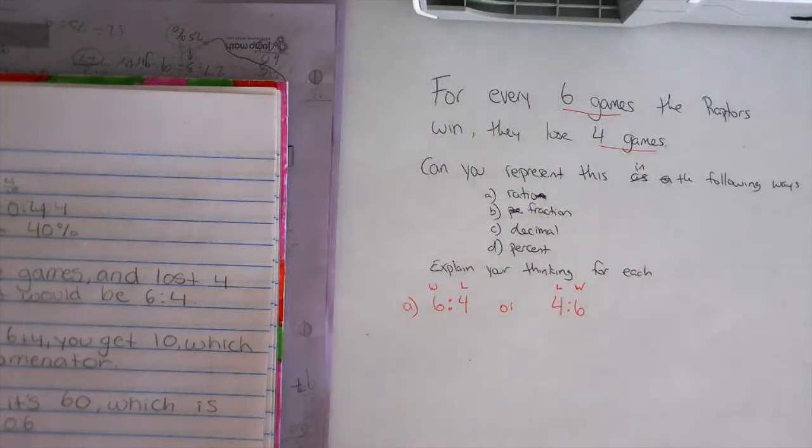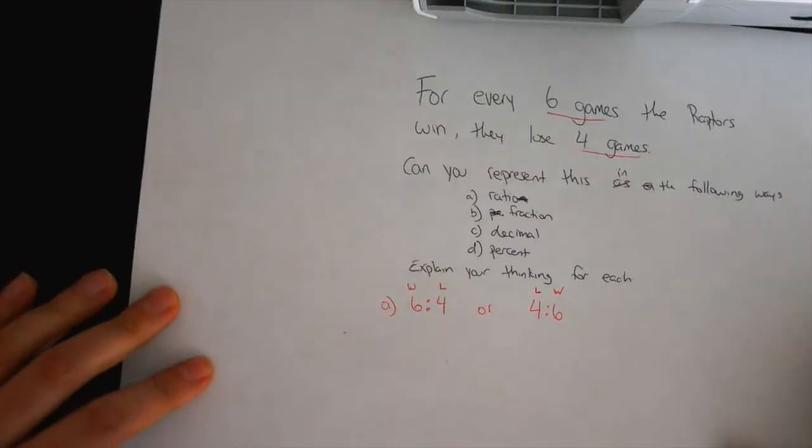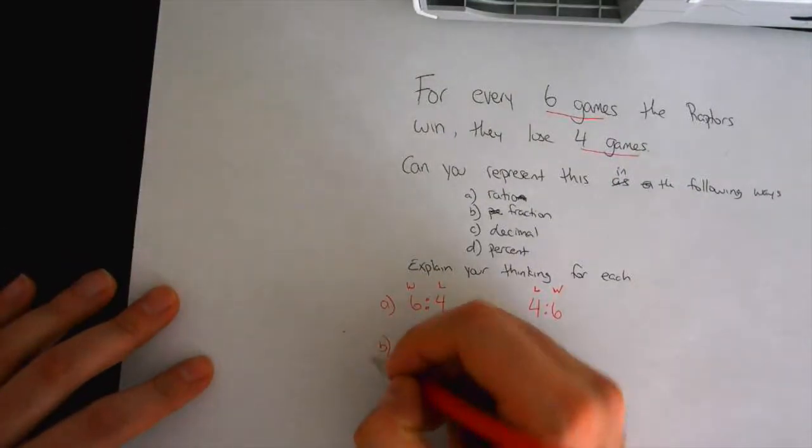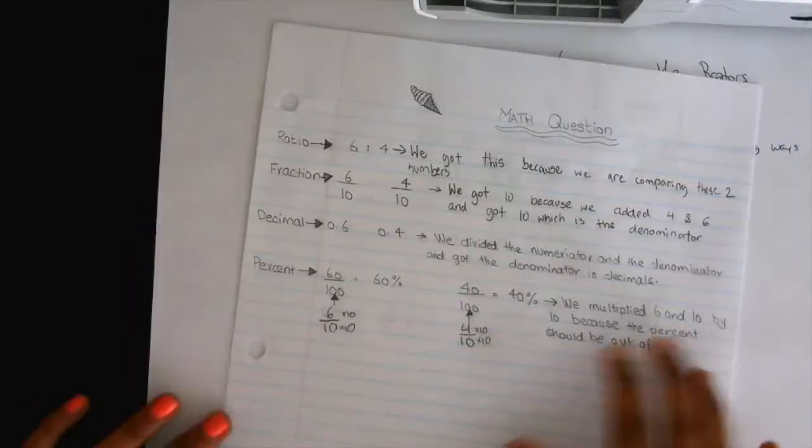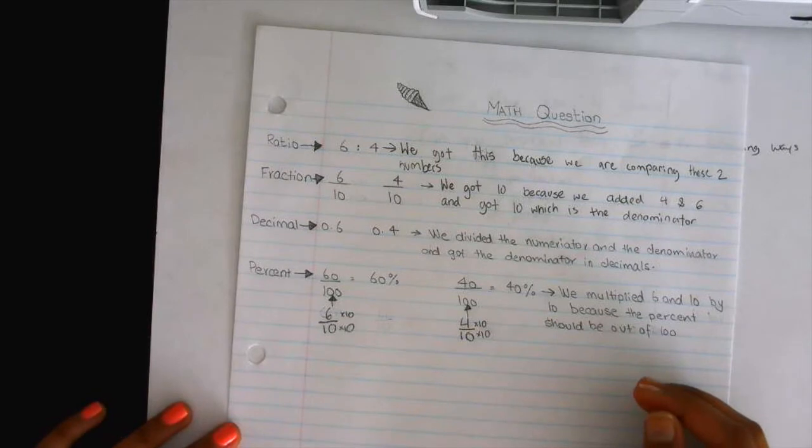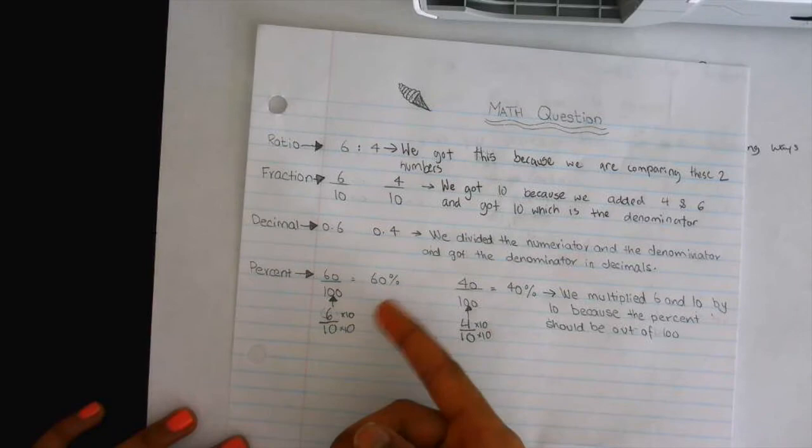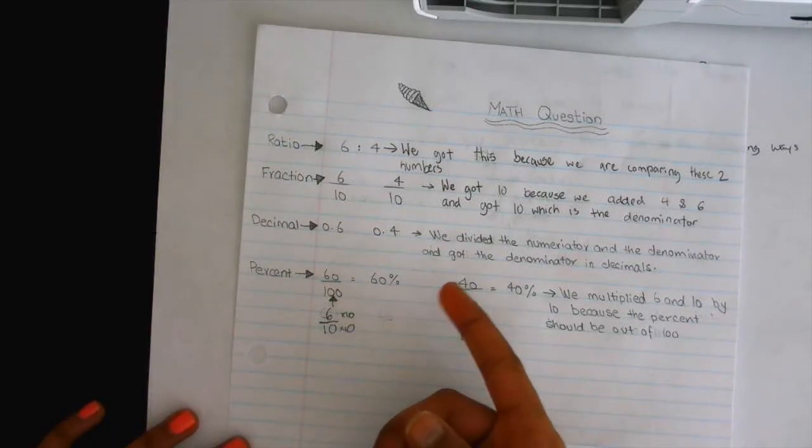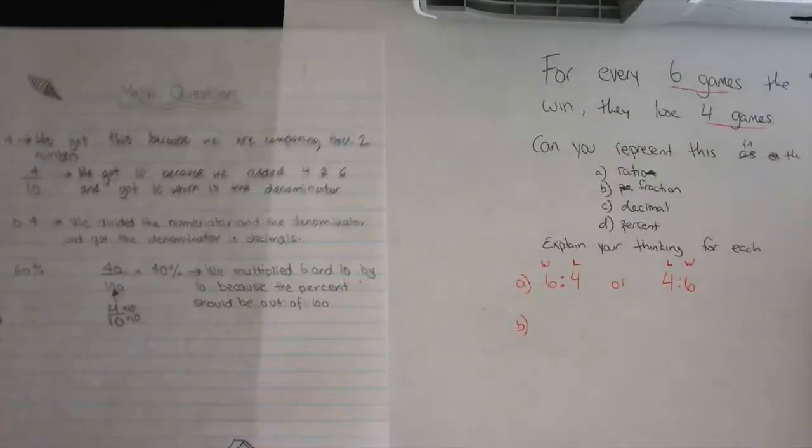Next one is a fraction. Can we represent this as a fraction? What we did was we knew that six was how much times they won, four was how much times they lost, so those were our numerators. We got ten as our denominators because six plus four is ten.